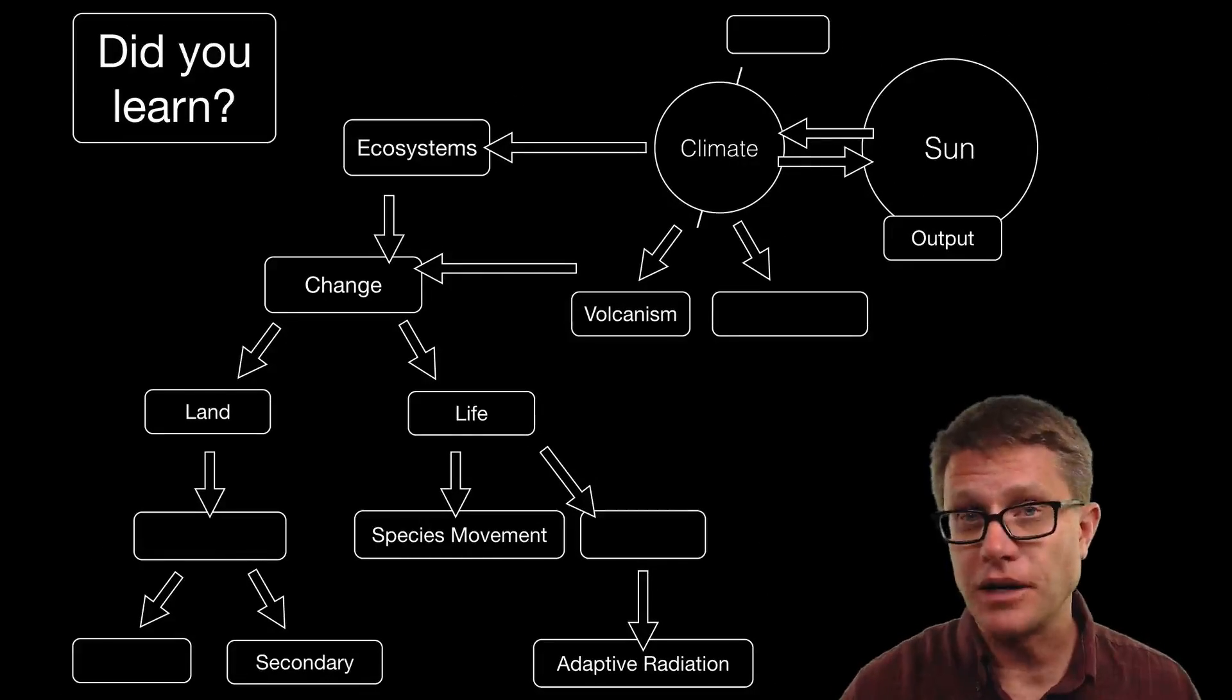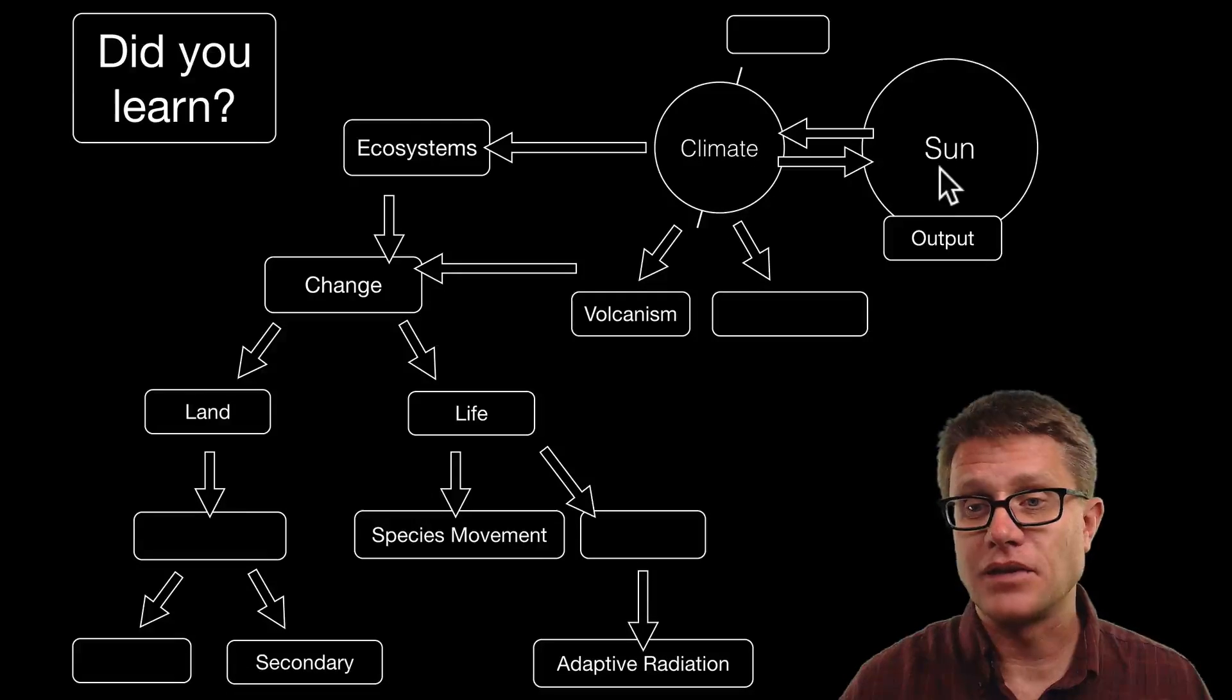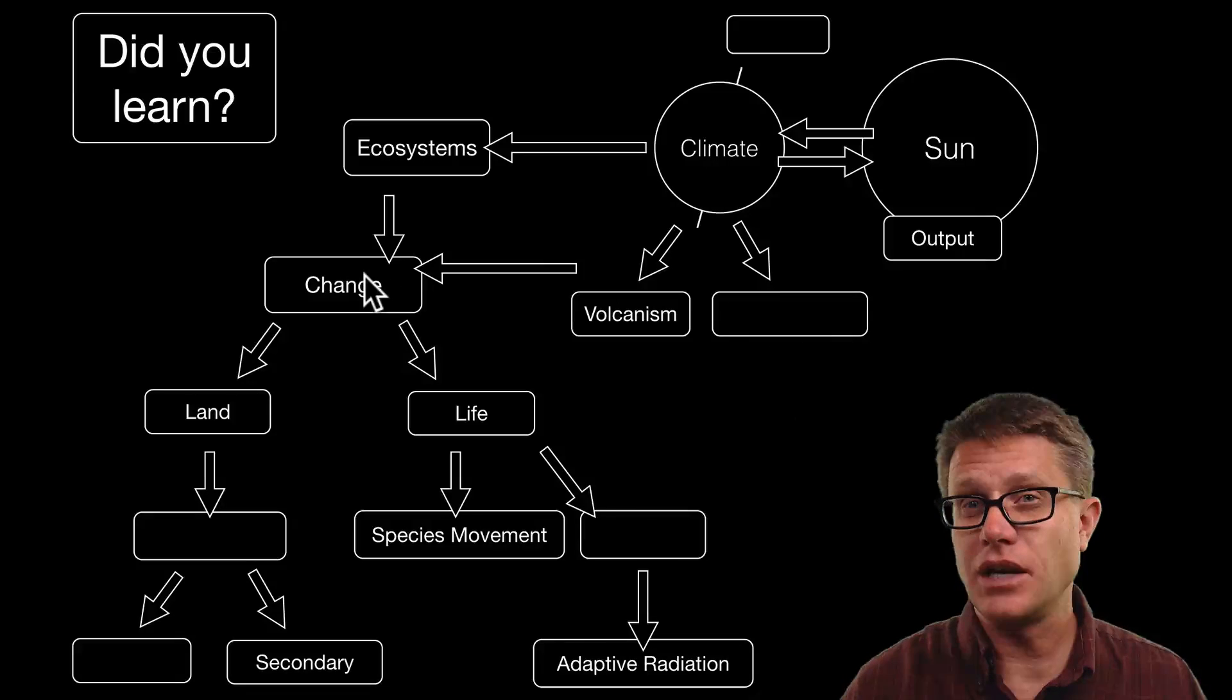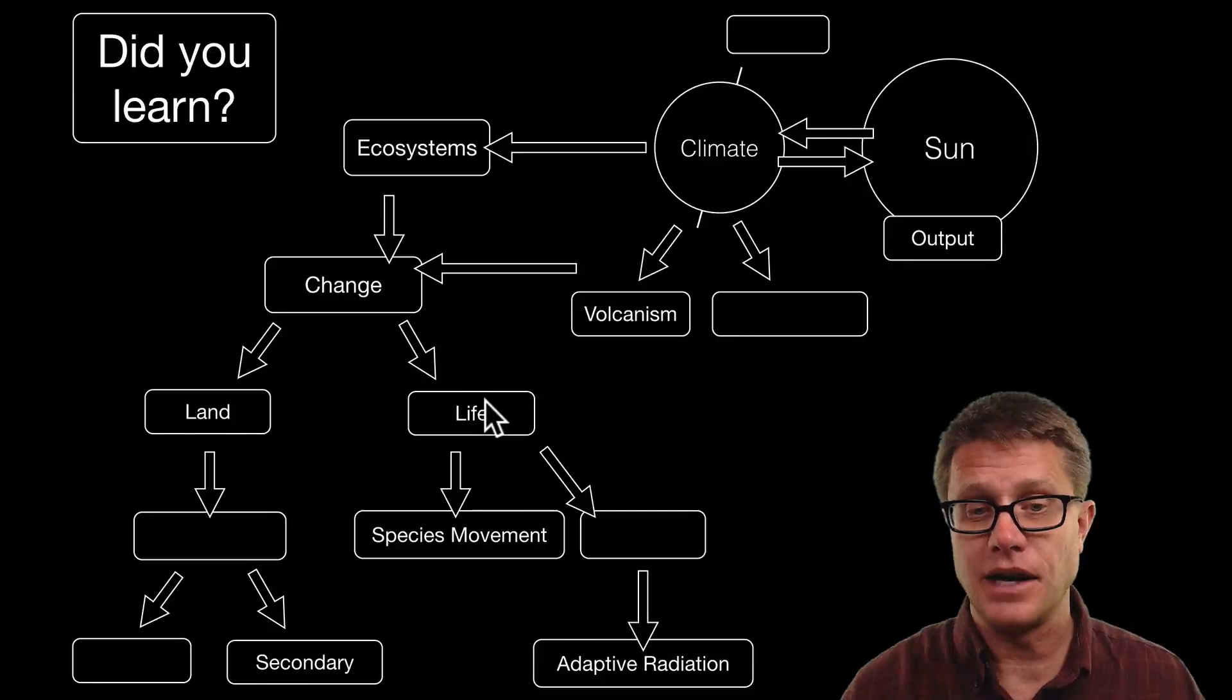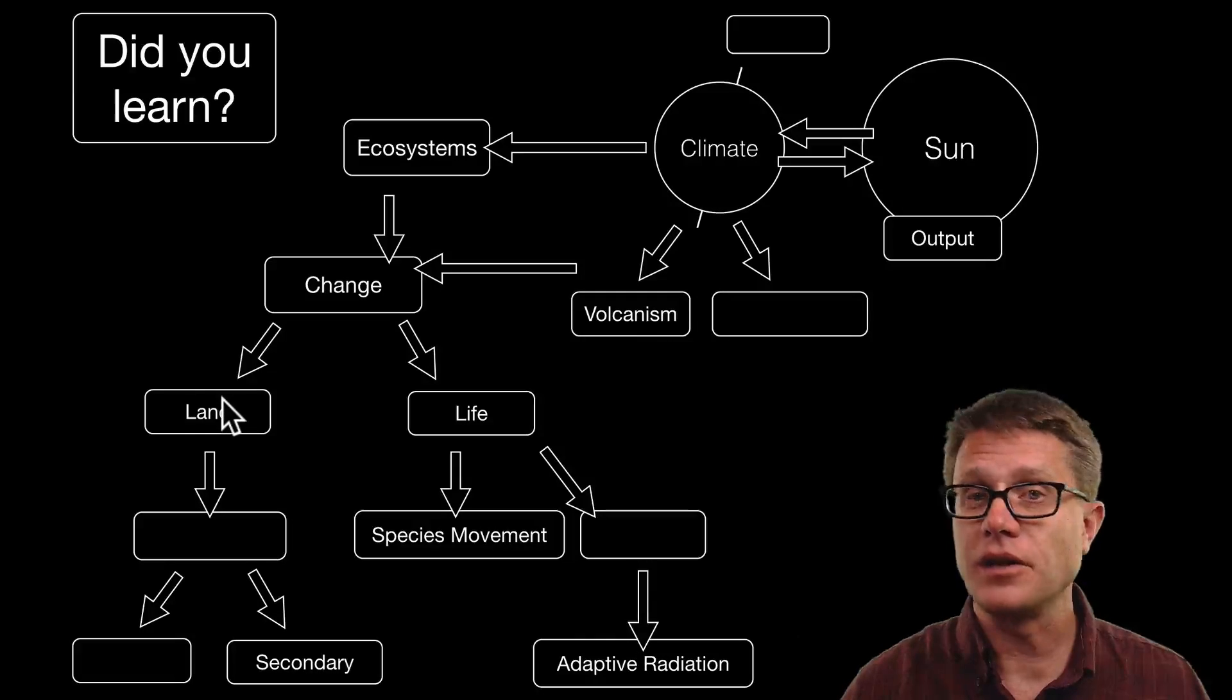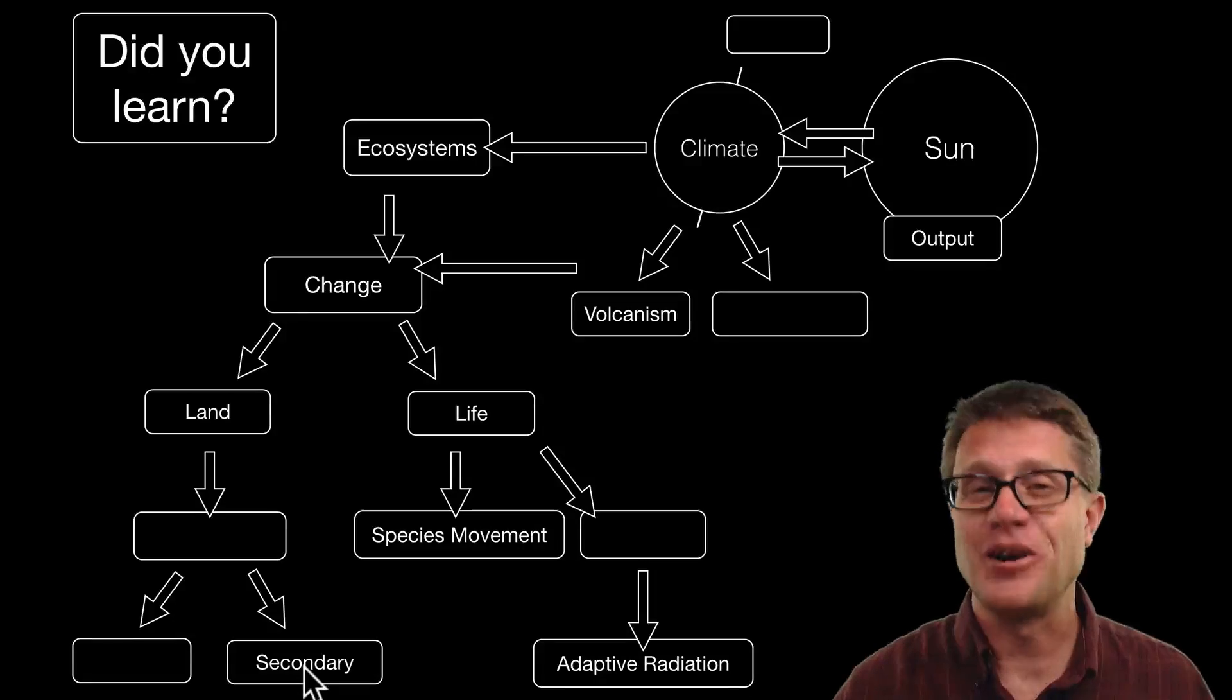And so did you learn the following? Could you pause the video now and fill in the blanks? So again, climate is affected by the sun's output, the orbit, volcanism and then plate tectonics. That changes the ecosystems, both land and life. Extinctions, mass extinctions eventually leads to adaptive radiation. And on the land we can have succession, either primary or secondary. And I hope that was helpful.